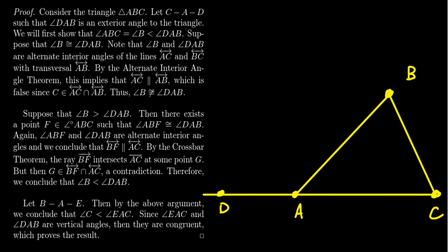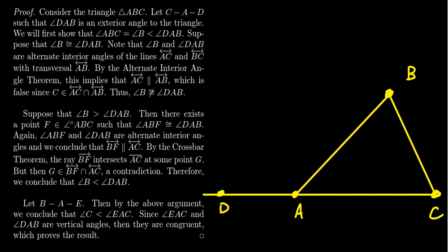We're going to first show that angle ABC — angle B for short — is smaller than exterior angle D, A, B. Given any two angles, there are three possibilities: the first is smaller, they're congruent, or the first is larger. We consider the other two possibilities and derive contradictions. So assuming angle B is congruent to angle D, A, B, and noting that angle B and the exterior angle are alternate interior angles to line A, C, with line A, B acting as a transversal — by the alternate interior angle theorem, line A, C would have to be parallel to line B, C. But those two lines both intersect at point C, which is a contradiction.